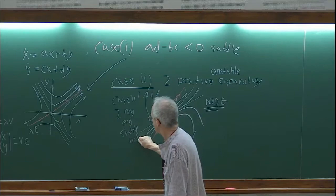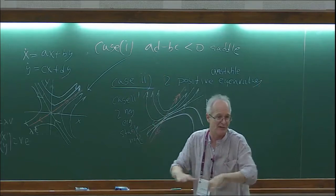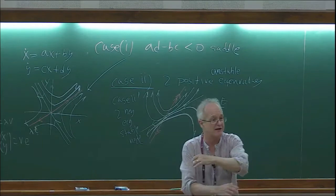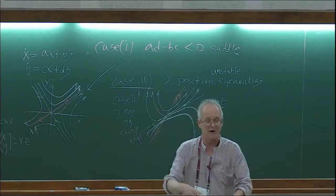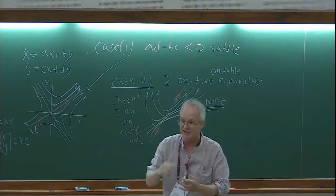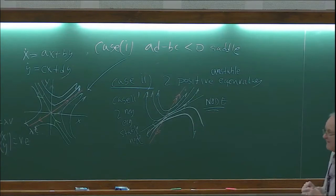This has a two-dimensional unstable space — in this case the whole plane. If you had a three-dimensional system, you could have two unstable directions and one stable direction — that's kind of a saddle. Things come in along the stable one and spew out along the unstable one. I want you to think about these things geometrically.